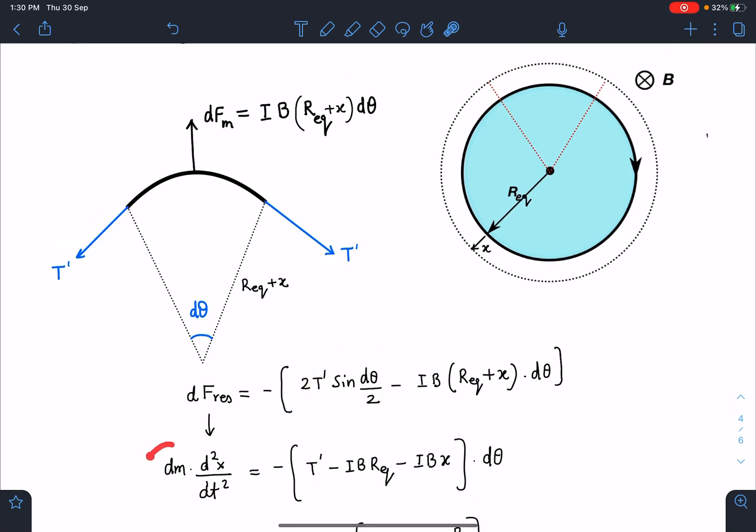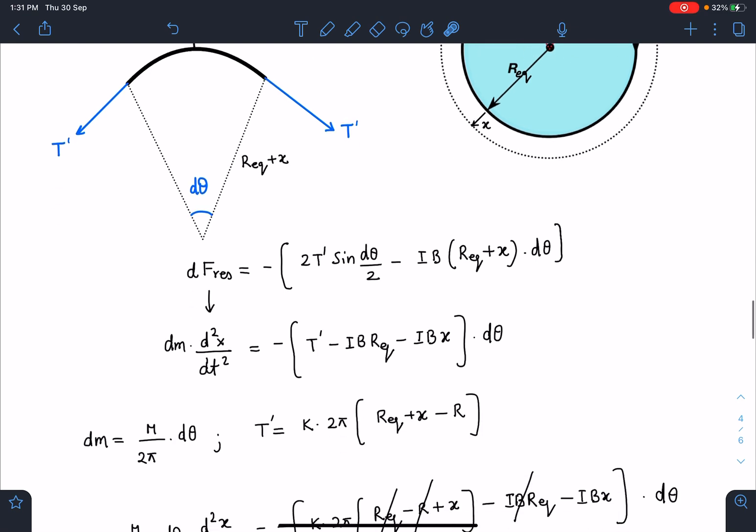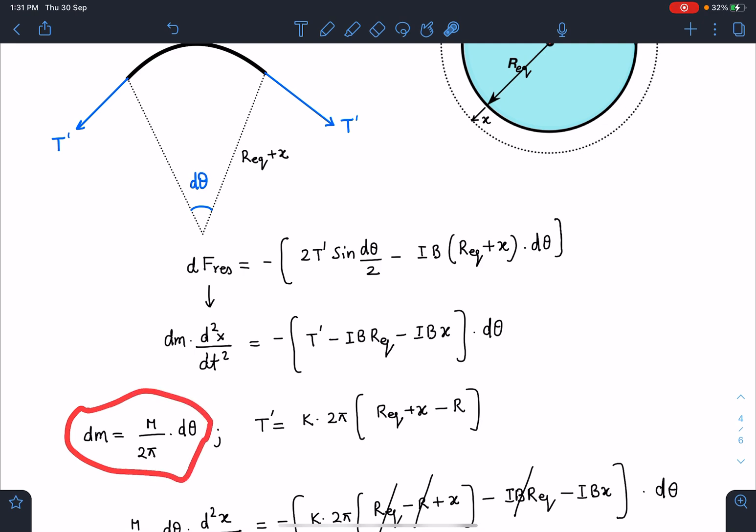And this dF I can write mass into acceleration. You can see T' - IB R_eq - IBx, and dθ comes outside. This dm I can simply write: for this ring linear mass density will not be conserved, but in any element when this length was different, it is the same element which is expanding, so its mass is never going to change. In terms of angle if we express, we get a constant term. You can see dm = M/(2π) dθ. Similarly T' will become 2πK times new radius minus initial radius.